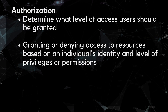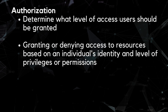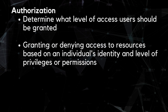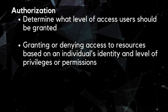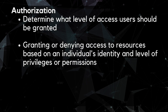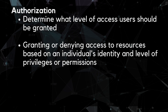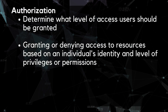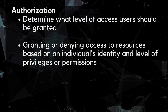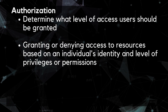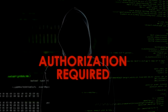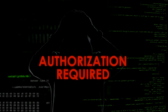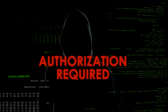The third component of IAAA is authorization. Once an individual has been authenticated, the system can determine what level of access they should be granted. Authorization, also known as access control, is the process of granting or denying access to resources based on an individual's identity and level of privileges or permissions. It is a crucial aspect of information security as it ensures only authorized individuals have access to sensitive data, systems, and resources.